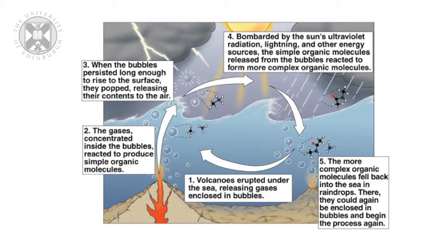Eventually these complex organic compounds would have rained back into the ocean as raindrops and rejoined that process, again forming bubbles and being recirculated to the surface of the ocean and back out into the atmosphere. There is no direct evidence for this process as a way to form the early compounds required for life, but it is a very interesting alternative possibility for the production of early organic compounds.